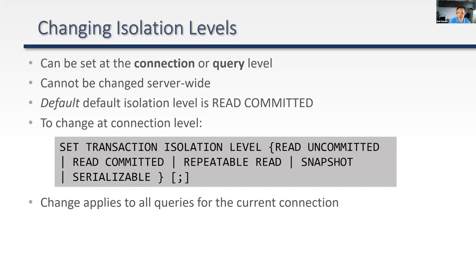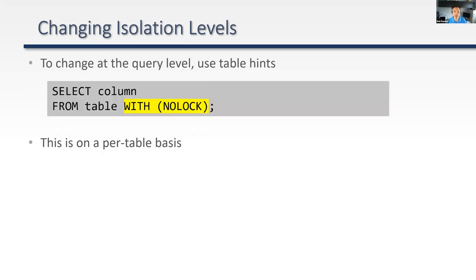The other way to change the isolation level is through query hints or table hints, changing it at the query level. The classic example is SELECT FROM a table WITH (NOLOCK). These hints are on a per-table basis, so if you've written a query with NOLOCK joining multiple tables, you have to specify WITH (NOLOCK) each time a table is mentioned.